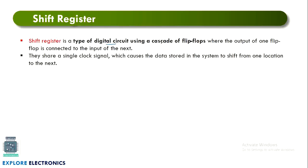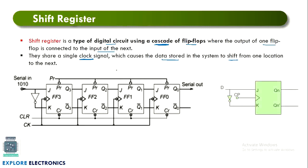A shift register is a type of digital circuit which uses cascading of flip-flops, meaning flip-flops are connected one after the other in a cascade connection, where the output of one flip-flop is connected to the input of the next. They share a single clock signal, which causes the data stored in the system to be shifted from one location to the next.